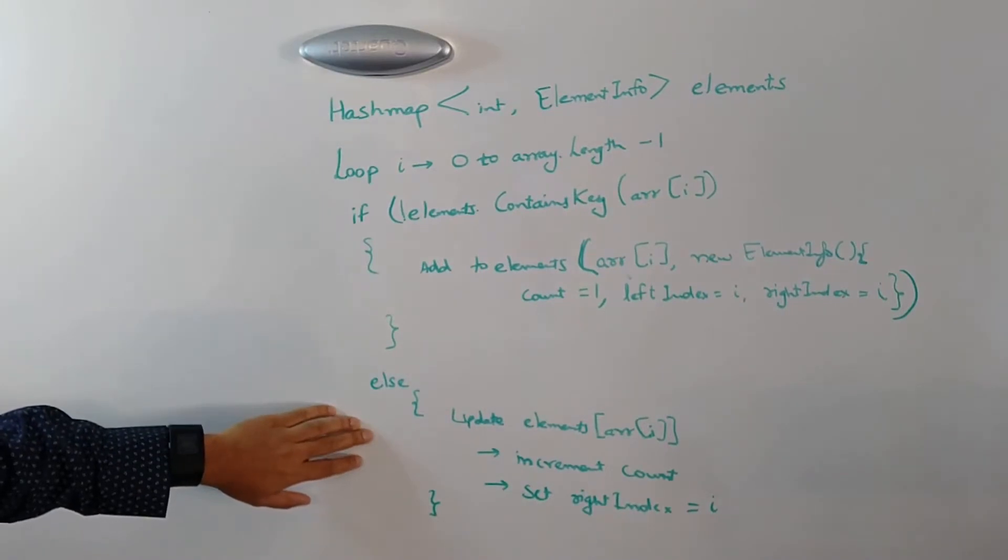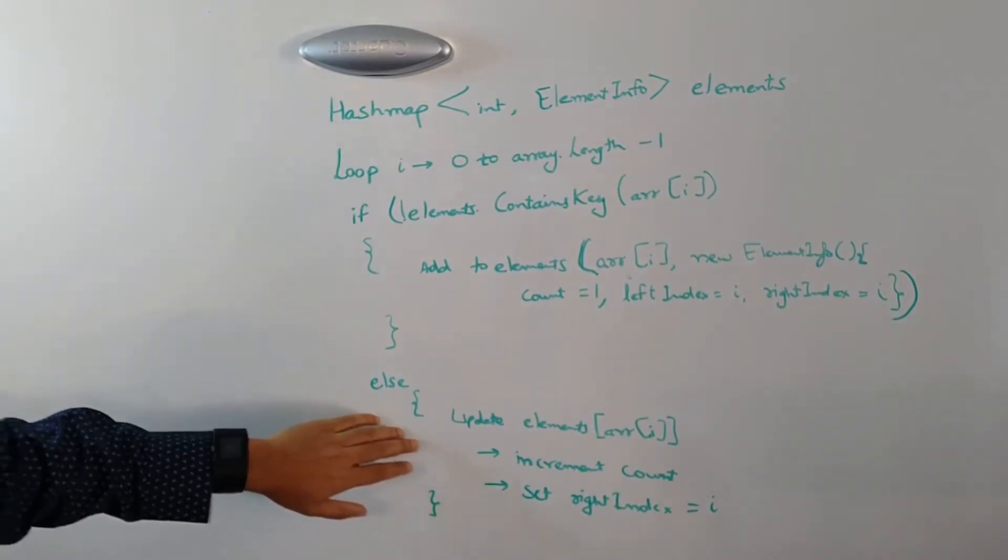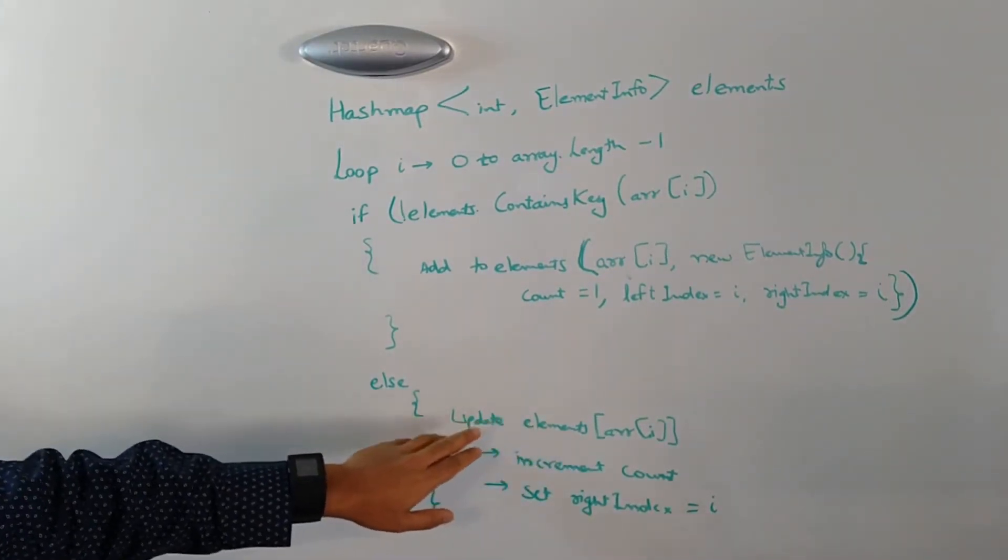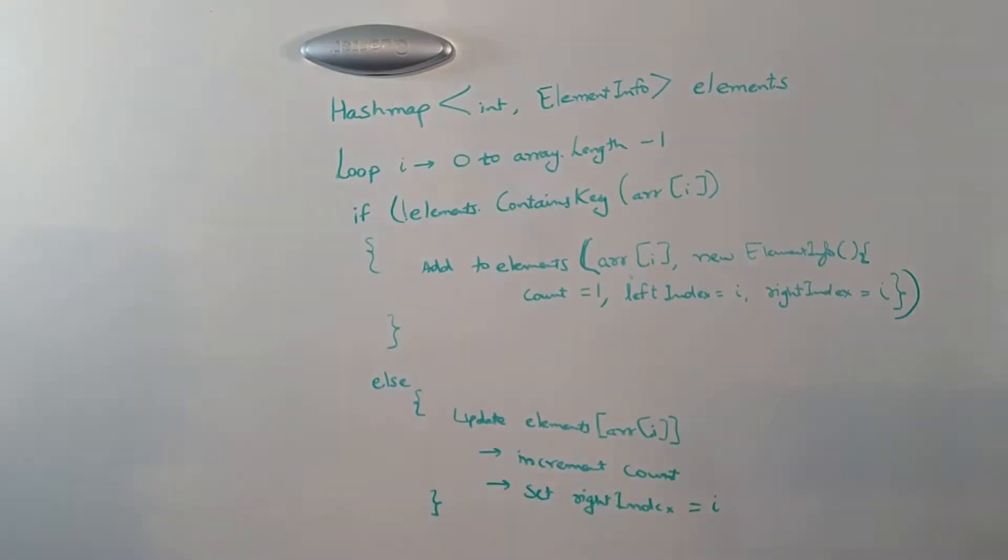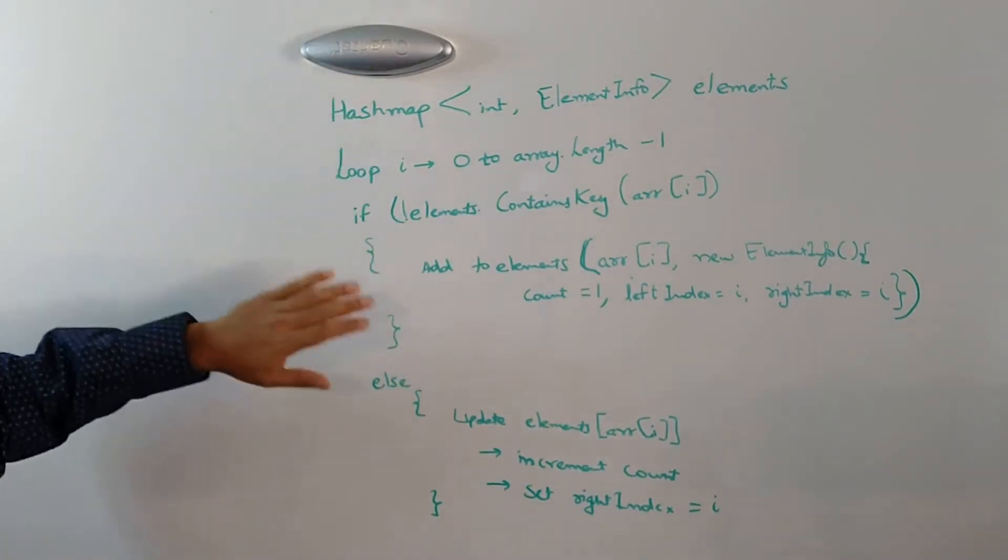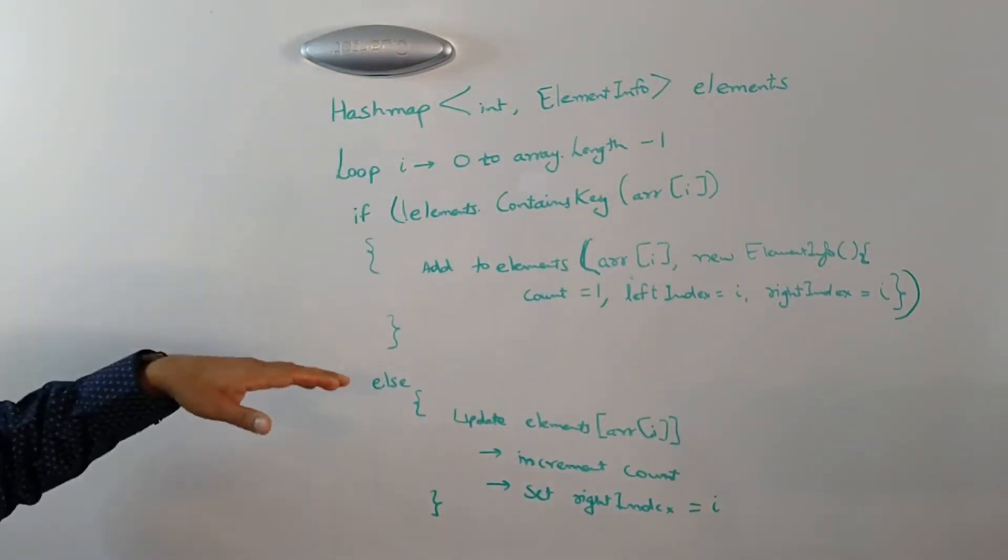If the element does exist in the hash map, we update the associated value. We increment the count and we set the right index to i. Once we have the hash map ready and filled up, let's look at the next step.